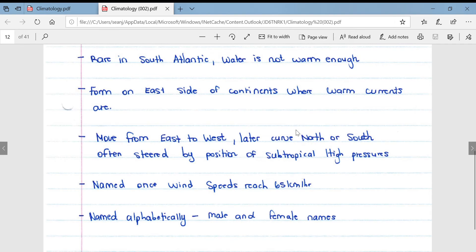They move from east to west and later curve north or south depending on where they're found. So obviously tropical cyclones in the southern hemisphere will tend to curve off south, whereas tropical cyclones in the northern hemisphere will tend to curve off north towards the poles. They're often steered by the position of the subtropical high pressures present in the atmosphere.